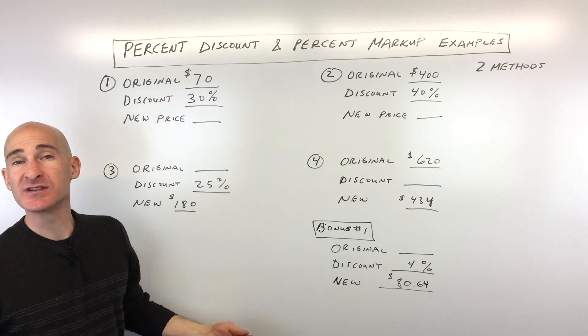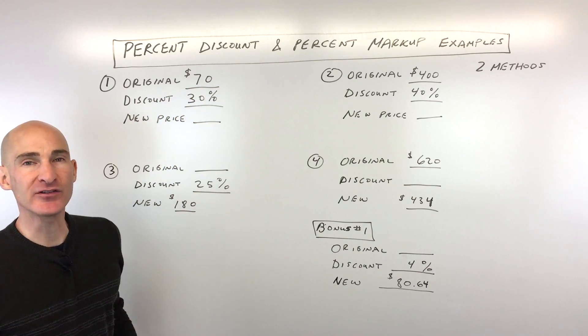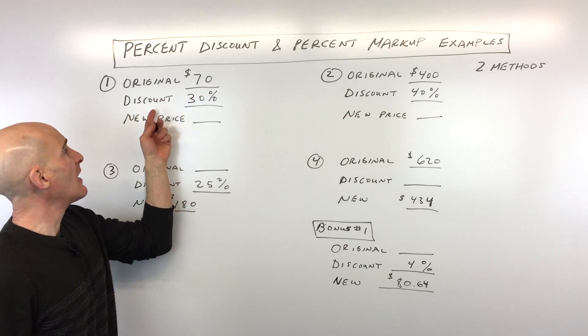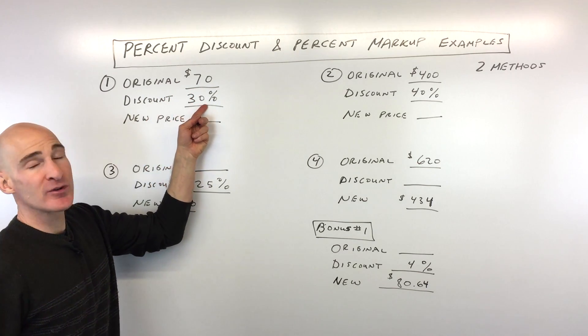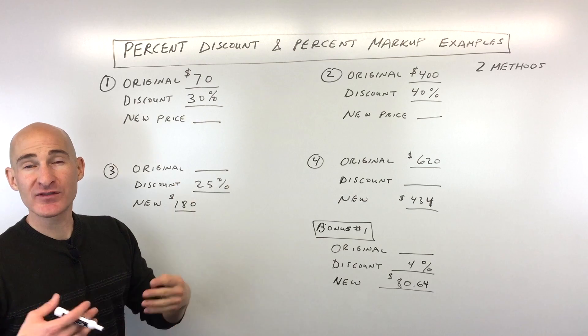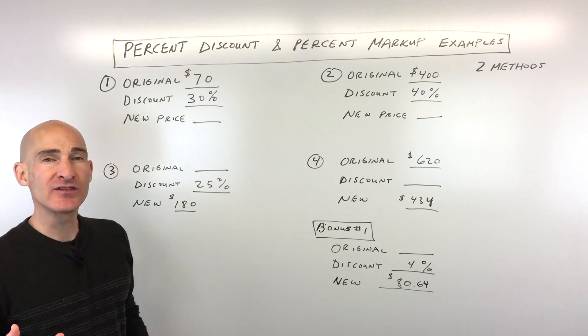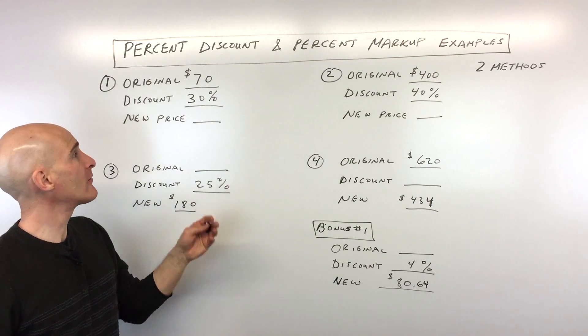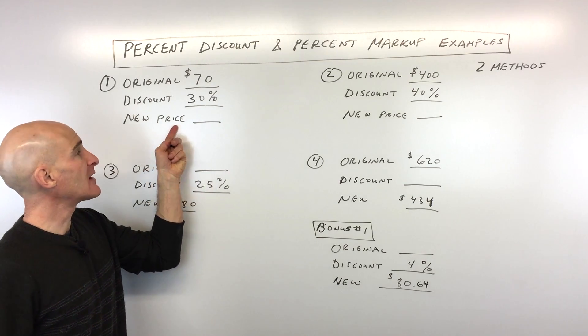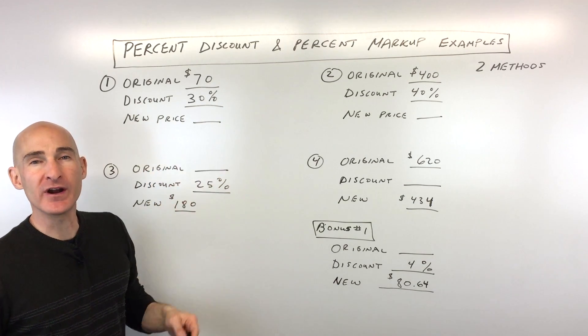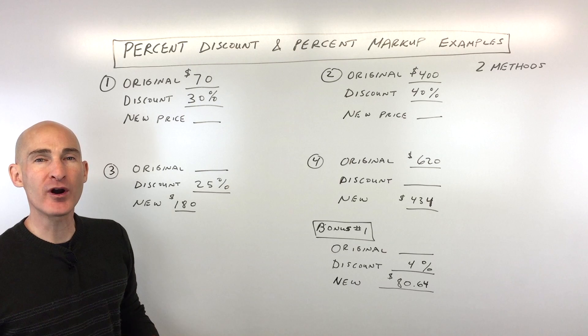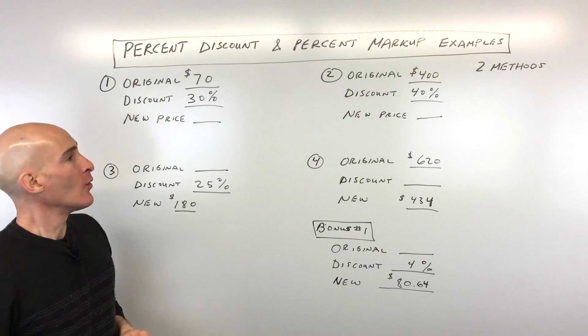Say the original price of an item is $70 and the discount is 30%. For example, they're having a sale — it's 30% off. And you want to find out, what's the new price? What's that sale price?